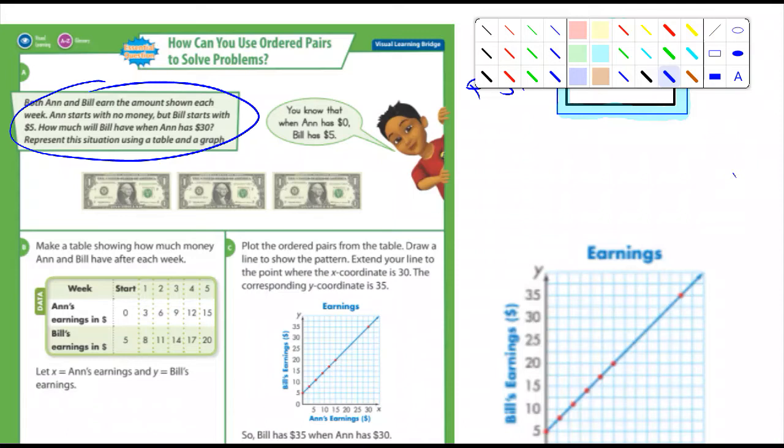So it says, make a table showing how much money Ann and Bill have earned each week. And so here's the table, which is a good example of that. It says Ann's earnings. Remember, she started at zero. And then, let's see here, is it $5 a week? Let Ann's earnings.